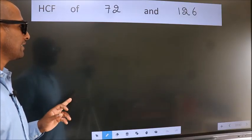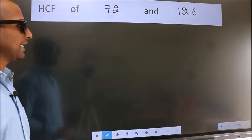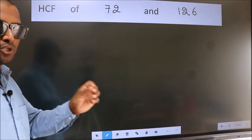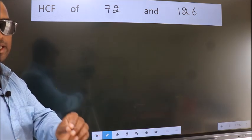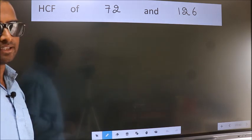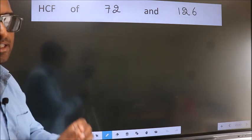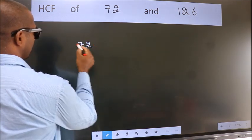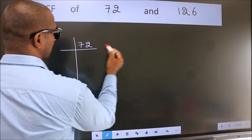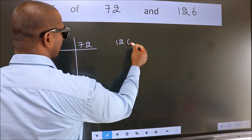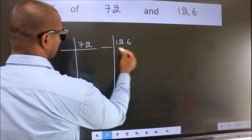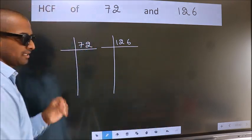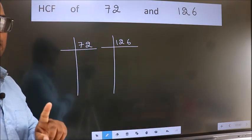HCF of 72 and 126. To find the HCF, we should do the prime factorization of each number separately. What I mean is, 72 here, 126 here. This is your step 1.